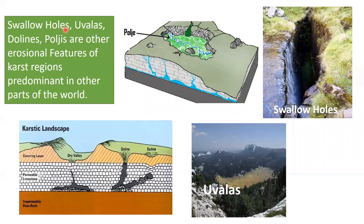Swallow holes, valles, dolines, and gorges are other erosional features of karst regions prevalent in other parts of the world. A large depression formed in karst areas is called a valle. Swallow holes are narrower than sinkholes.